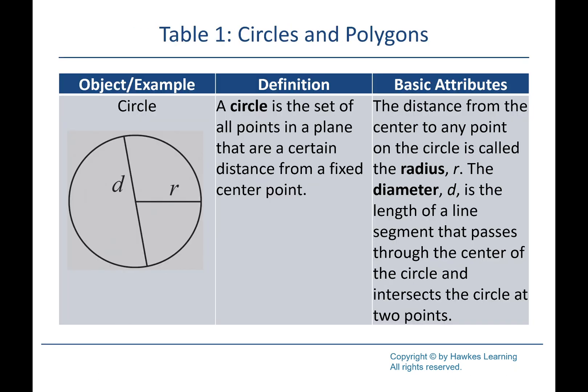A brief review on circles: if we go halfway across the circle from the center out to the edge, we call that a radius. If we draw a line all the way across the circle through the center, that's a diameter. If we're given the diameter and need the radius, divide by two; given the radius and need the diameter, multiply by two.